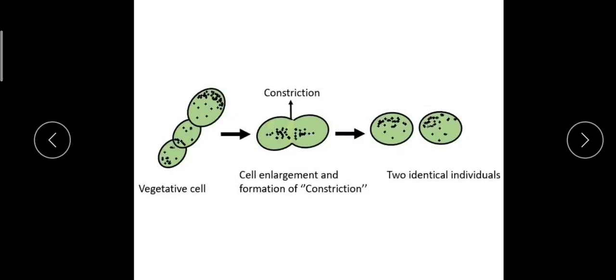One of the methods is also fission. Here you can see what fission is. As the name suggests, this single cell may have a constriction, and each cell divides to form two identical individual cells.